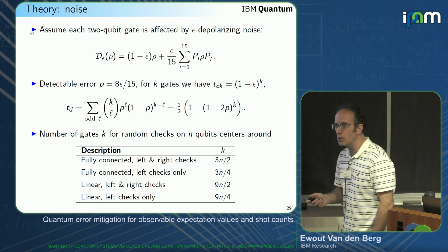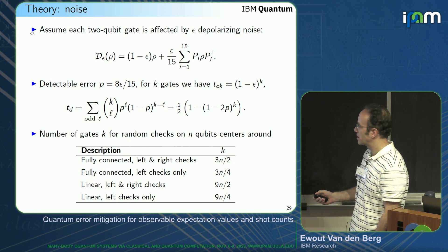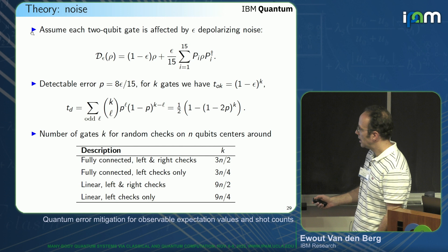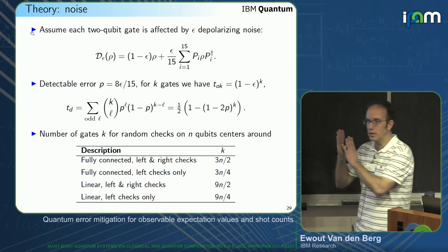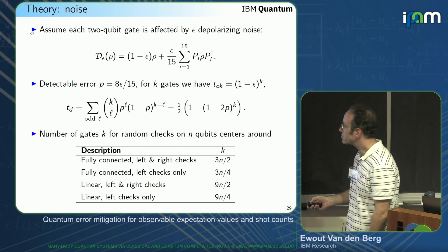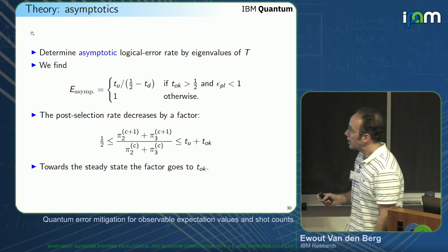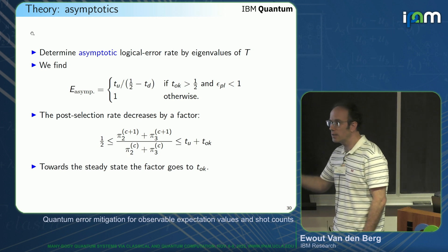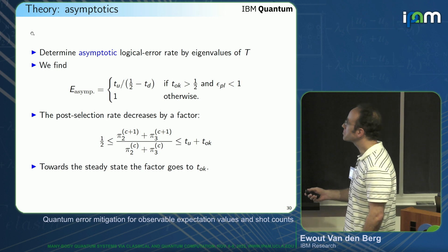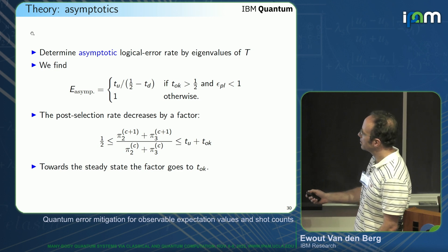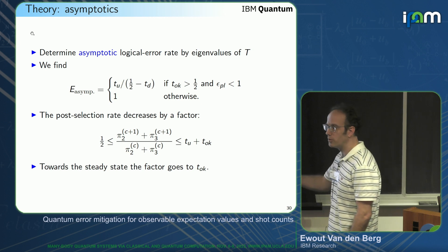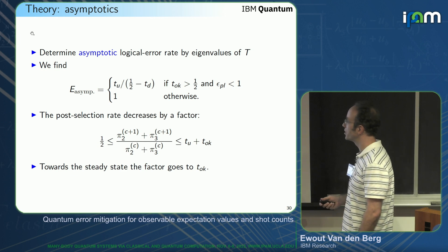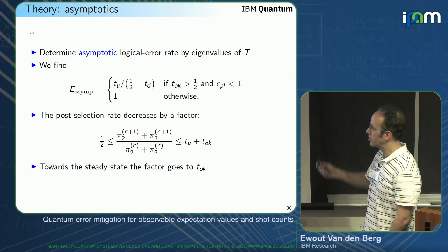How many gates do we need to implement these checks? For random checks, you can look at fully connected left-and-right checks, left-only, or linear, and these are the values along which they concentrate. Looking at asymptotic logical error rates via the eigenvalues of T: if the probability of applying the check without errors is greater than one-half and the payload error is strictly less than one, the logical error rate converges. Otherwise it will go to one.